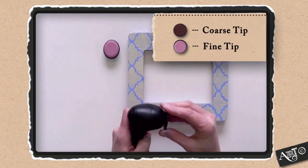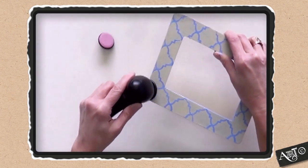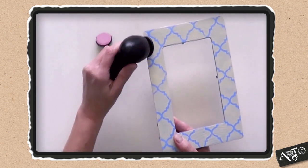Select either the coarse or the fine sanding tip and snap it onto the tool. With the Groove tool on high, gently guide the tip across your surface until you achieve the desired results.